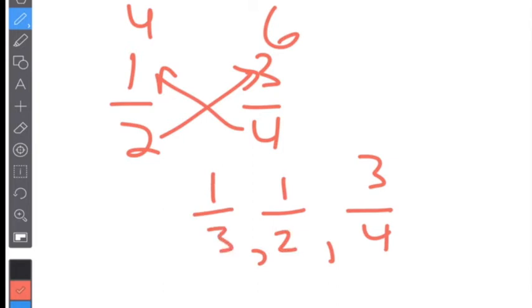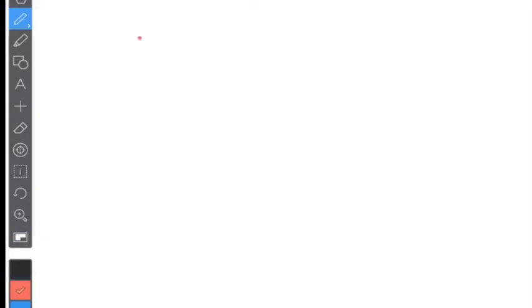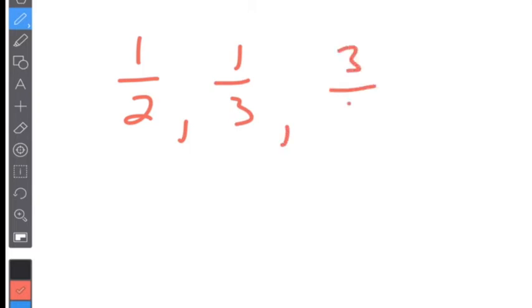Another way to do it is to find the least common denominator. So if we have one half, one third, and three fourths, if you can't figure out the least common denominator by looking at them, you would have to write out all of the multiples and then find the first one that's in common with all three. But I know that the least common denominator here is 12.